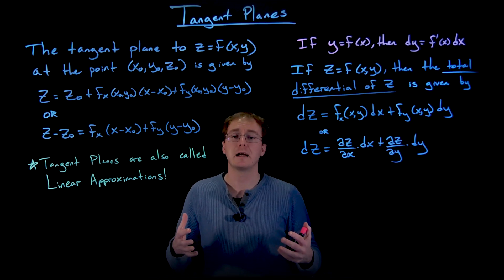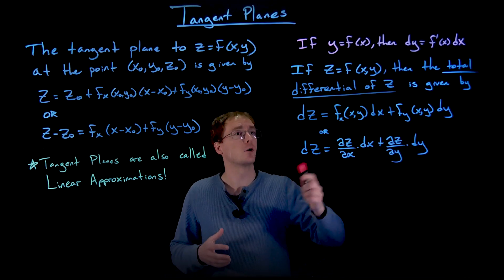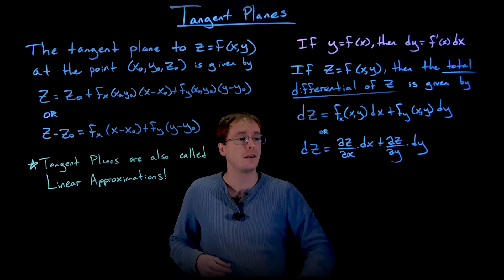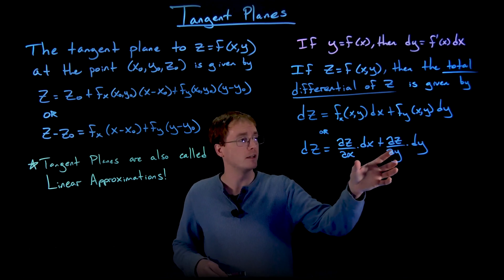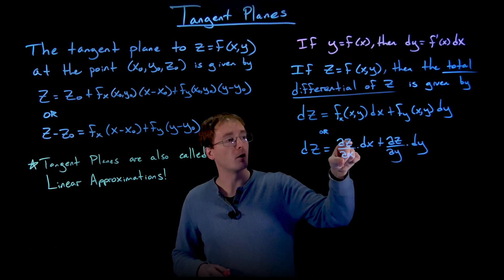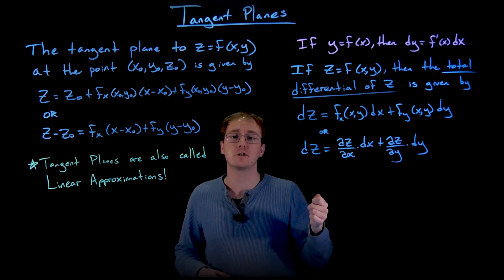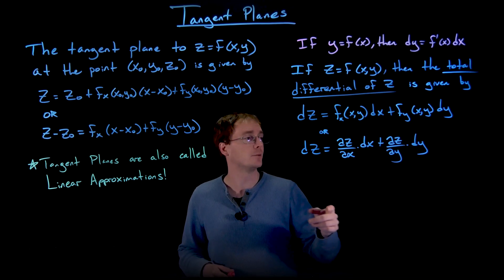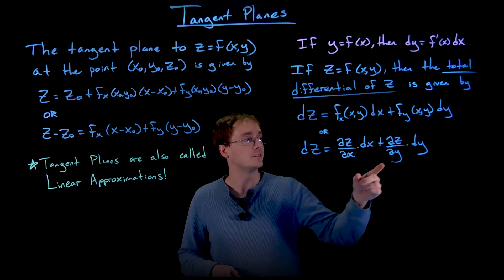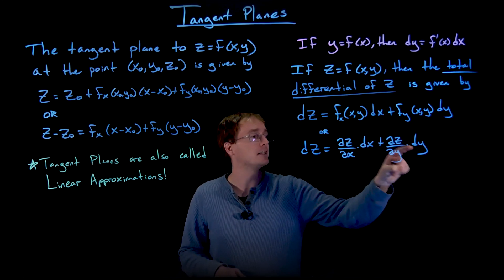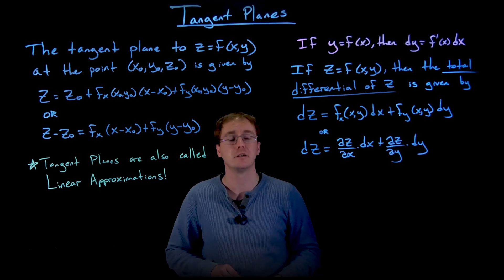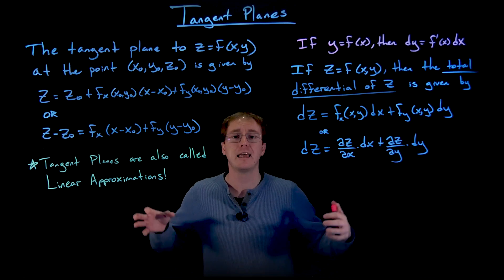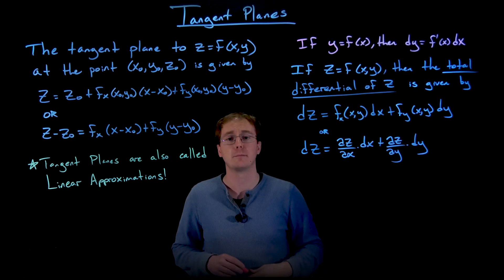The total differential of z is trying to measure the total change in our function as we move away from the current point. This makes intuitive sense: the partial derivative of z with respect to x is the rate of change in the x direction, and dx is the step size we take in x. Similarly, ∂z/∂y is the rate of change in the y direction and dy is how far we move in that direction. Adding these together gives the total change in our function.